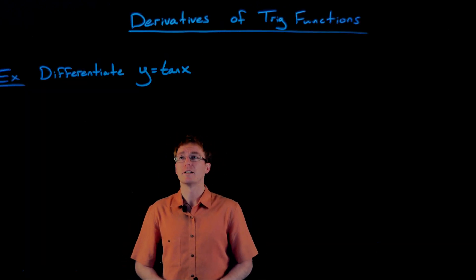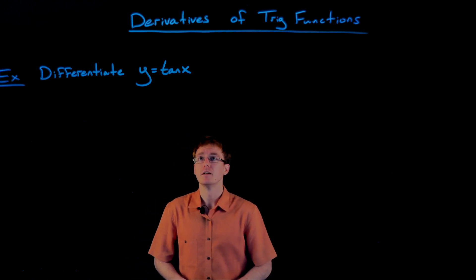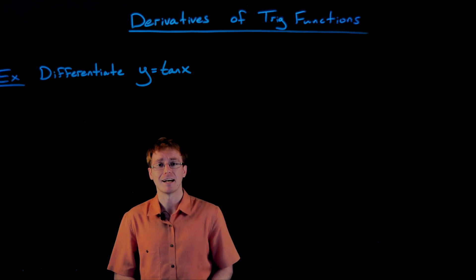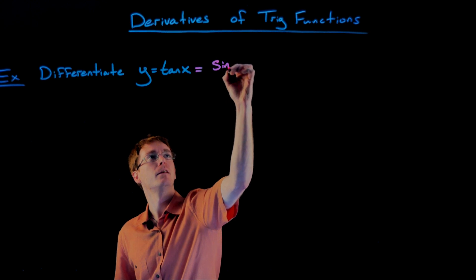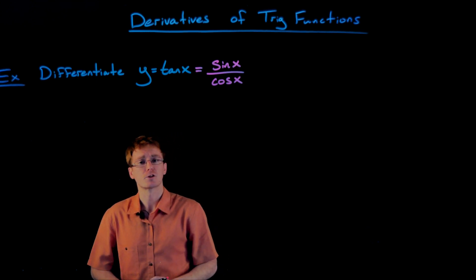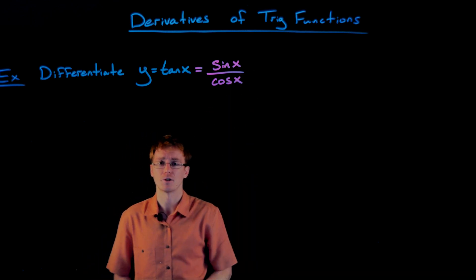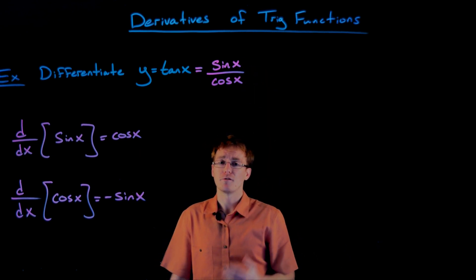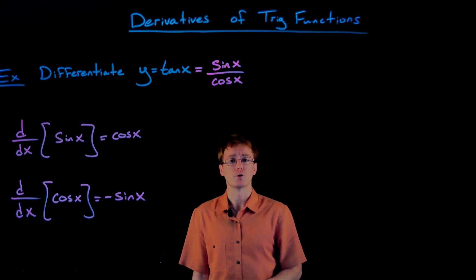In this next example, we're going to differentiate our tangent function. In order to do this, we first need to rewrite our tangent function in terms of sine and cosine. Remember the quotient identity: tangent of x is the same as sine of x divided by cosine of x. The reason we're expressing tangent in terms of sine and cosine is because we know how to take the derivatives of those functions. Since we have sine divided by cosine, we're going to have to use our quotient rule.